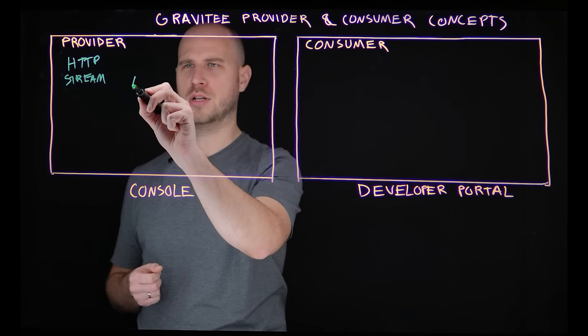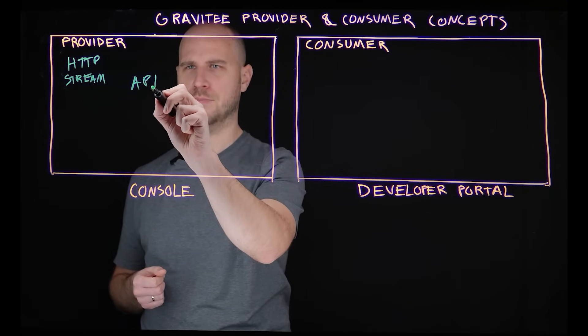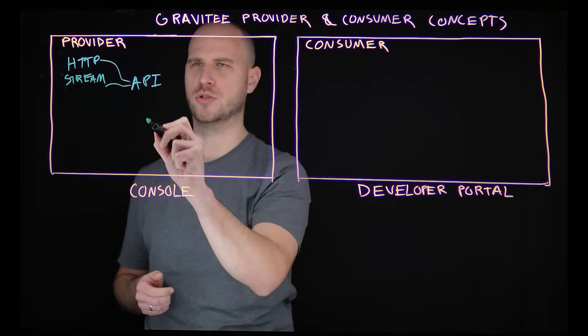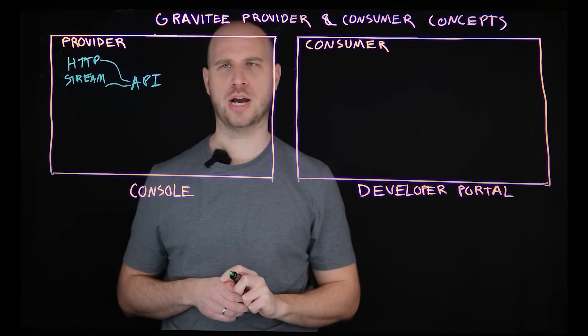And in Gravity you have the concept of an API. So an API is effectively the proxy on top of those services that your consumers will be interacting with.